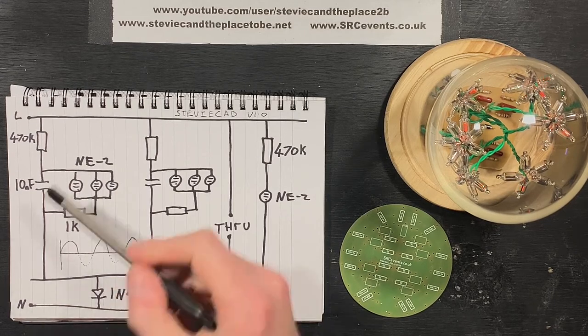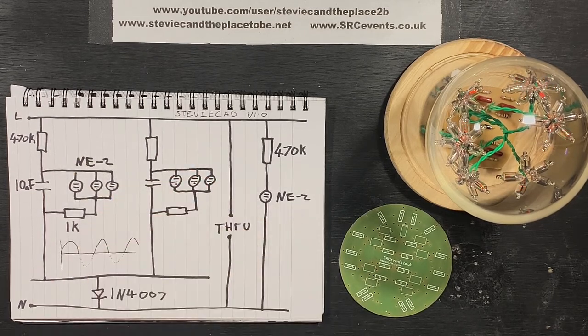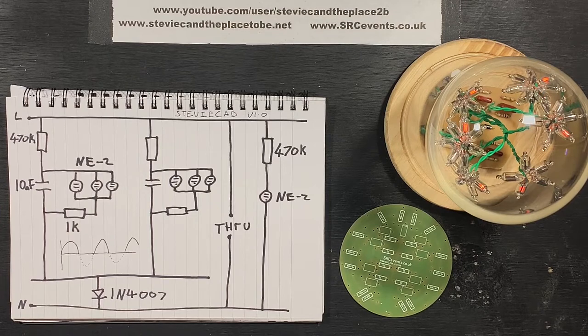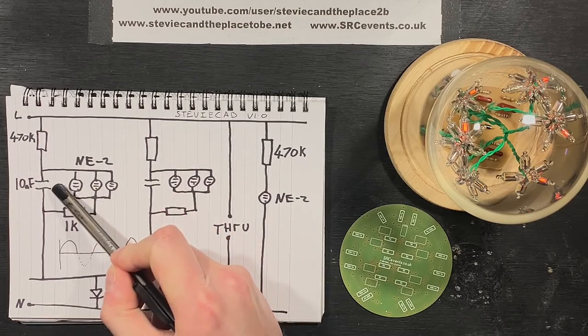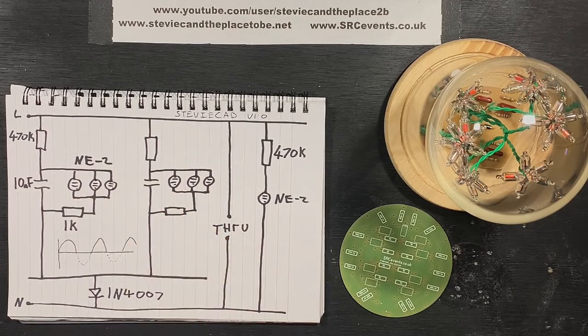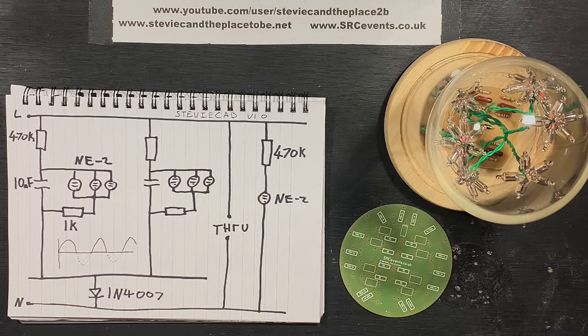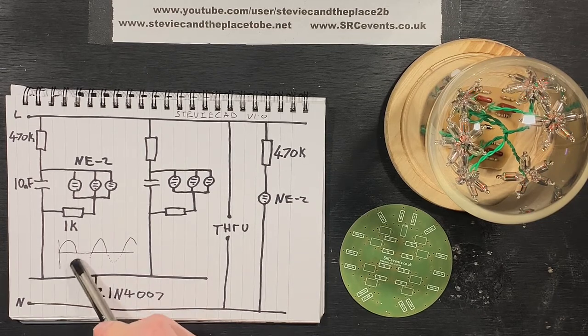The circuitry is the usual dropper resistor. This can be anything from 100 kilo ohms to several mega ohms for 240 volts. I'm using 470k here. The resistor charges this 10 nanofarad capacitor via the diode which half rectifies the AC into pulse DC to make the neons randomly light.